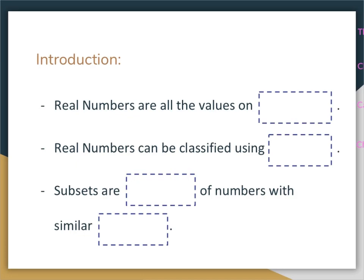Real numbers are all the values on the number line. We're not going to be talking about any numbers that are not on the number line today. Are there numbers that are not on the number line? Yes — we call those imaginary numbers, but we're not going to be talking about them until Algebra 2. So we're going to worry about only the numbers on the number line today.